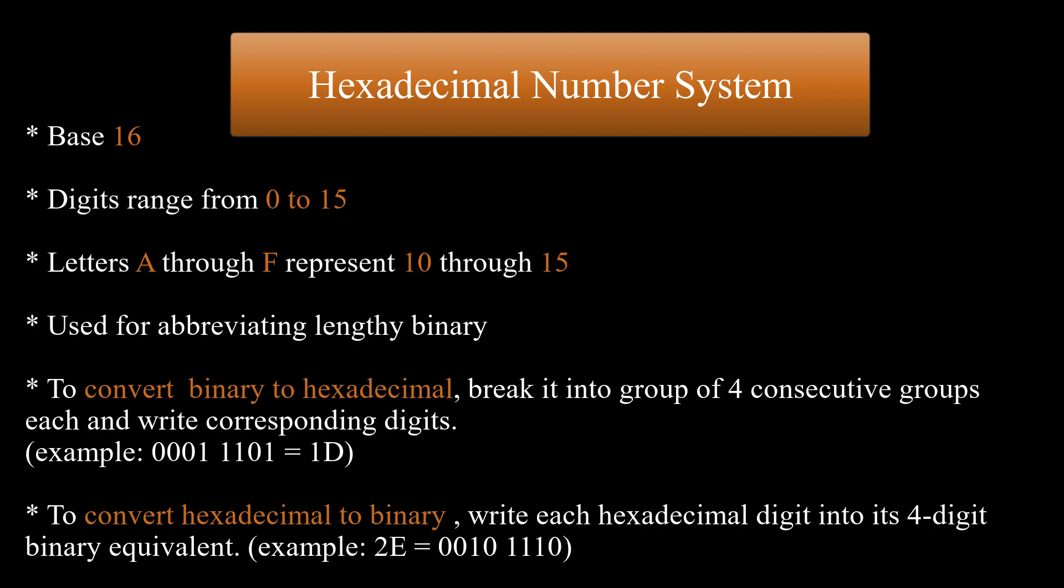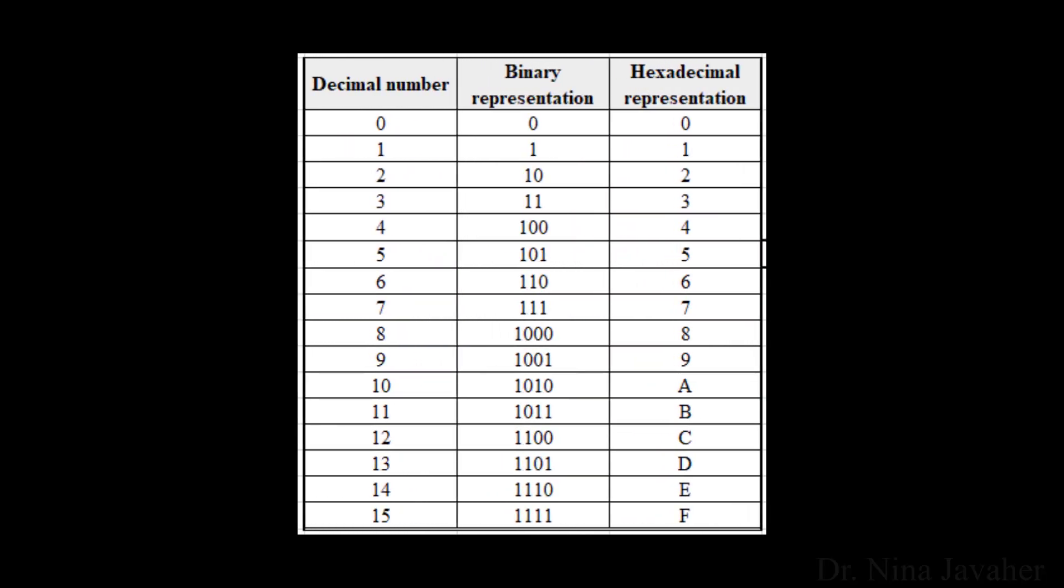To convert hexadecimal numbers to binary, it's very simple as well. Just write each hexadecimal digits into its 4-digit binary equivalent. For example, hexadecimal number 2e is equivalent to binary 00101110. Here's a table representing the decimal, binary, and hexadecimal equivalents.